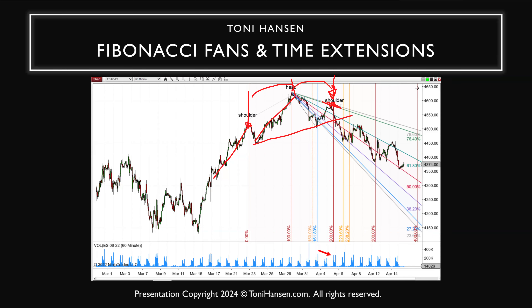That helps protect against an early setup where you might take a channel break before the correction has lasted long enough in time development to support a downside move. It also protects against a base that goes too far — if it tries to break when it's too far, it's more likely to be a trap. What I consider 'too far' using a fibonacci time extension is if you're looking at the 123.6 extension. On NinjaTrader it shows as 223.6, on TradeStation as 123.6 — it's the extension of this move in that direction.